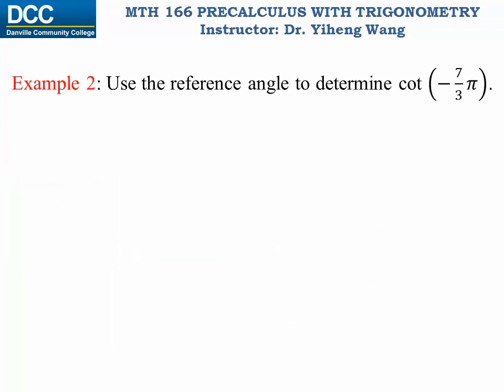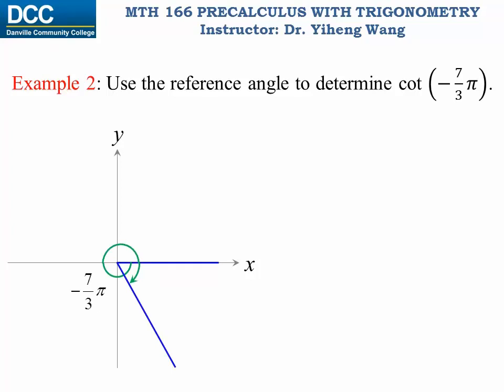Let's look at another example. We need to use the reference angle to determine cotangent(−7π/3). Again, let's first sketch this angle. It is a negative angle and it is more than one revolution, so we sketch it in its standard position. The terminal side is in the fourth quadrant, and the reference angle is the acute angle made by the terminal side and the horizontal axis. We can tell that the reference angle is π/3.